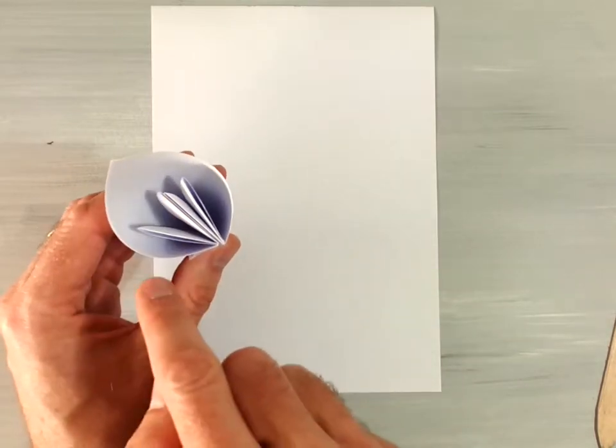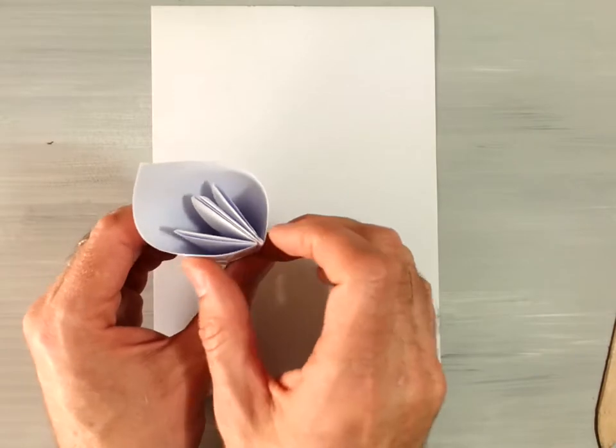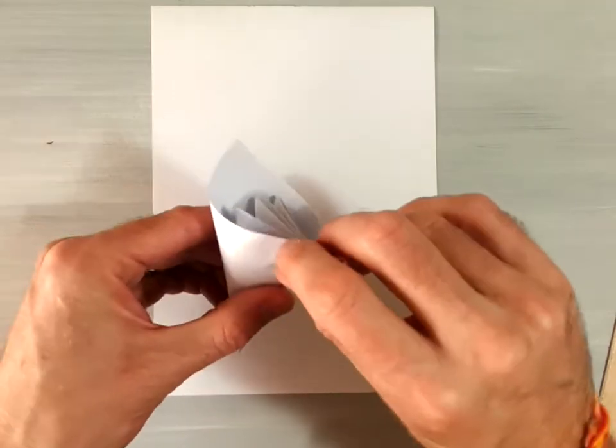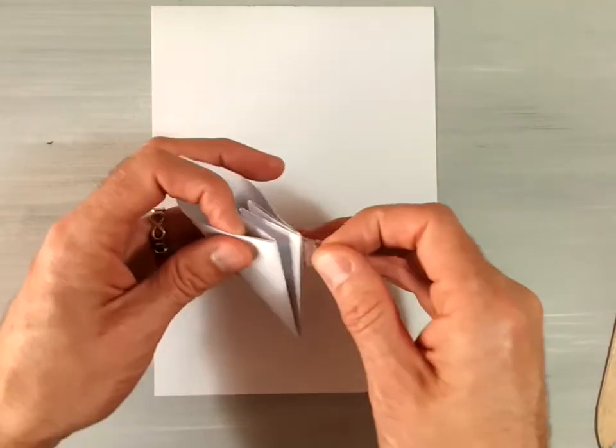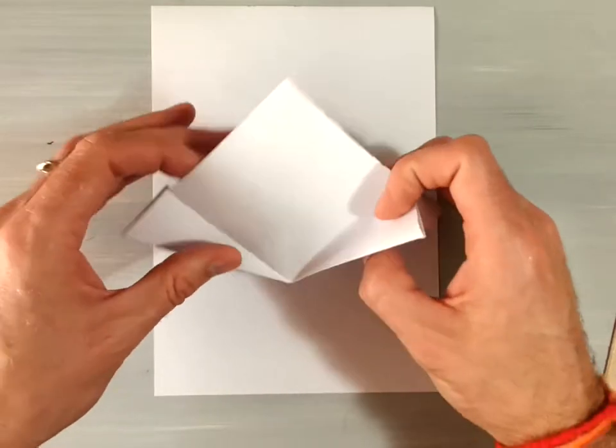This petal forms one-fifth of the entire flower. If I unfold it here for you, you can see that we've got some fractions that are involved with this model.